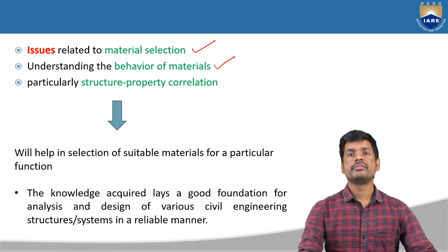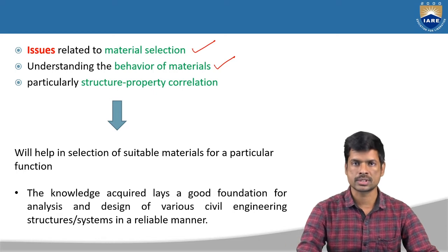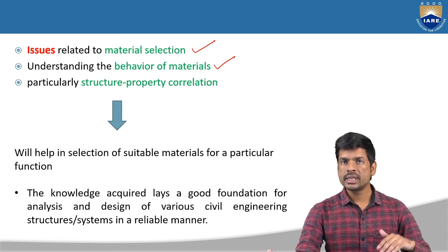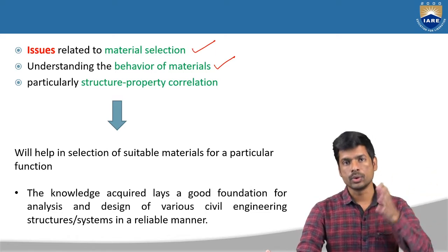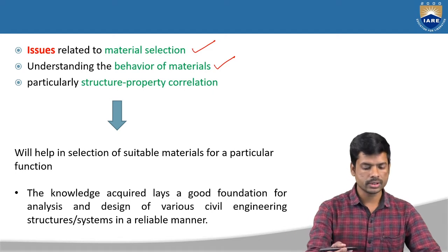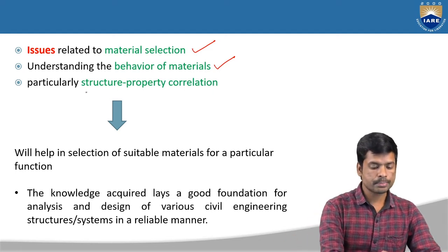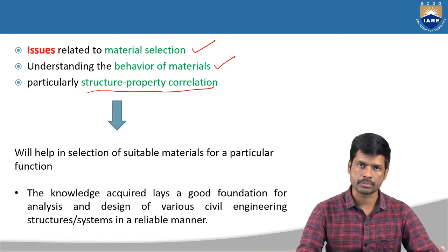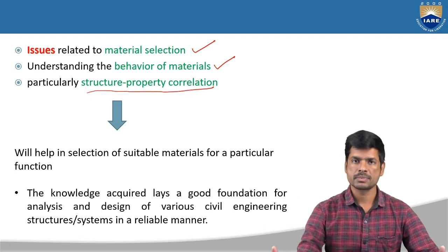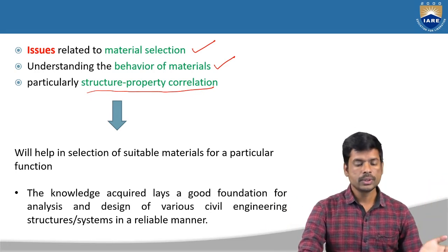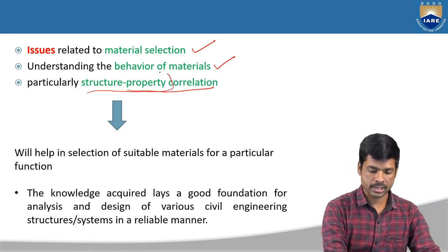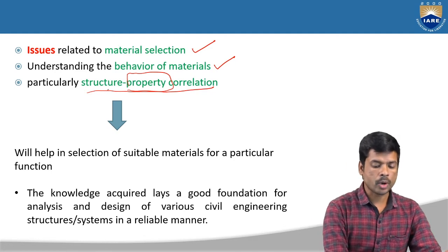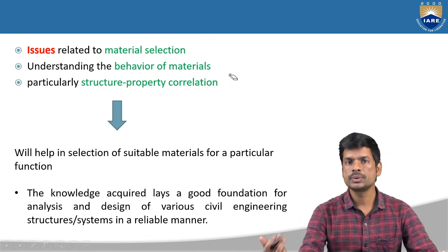Next, understanding the behavior of materials — when you apply any load on a material, how it behaves under loads. We will observe different types of behaviors: physical properties without applying loads, and mechanical properties with loads applied. That is also we are going to learn in this subject. Additionally, structure-property correlation is very important. Depending upon the type of structure — whether residential or commercial — we correlate material properties to the structure. We cannot use all materials in all structures, so structure-to-property correlation is essential.